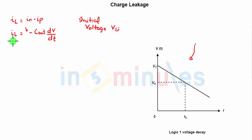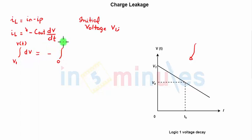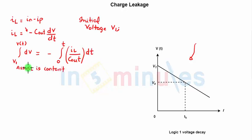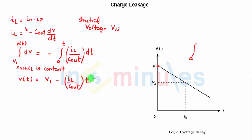We integrate this equation. The initial voltage was V1 and we want the voltage at time T, so integrating dV from V1 to V(T) equals minus the integral from 0 to T of (I_L / C_out) dt. Assuming I_L is constant, we get: V(t) = V1 − (I_L / C_out) · t. This equation tells us that as time increases, the voltage decreases as a function of time.